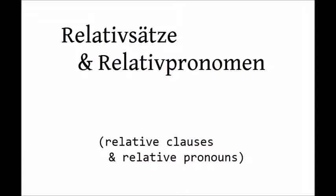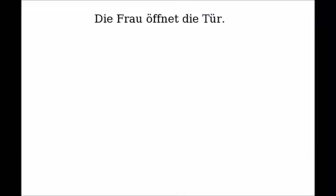Let's say you have a sentence like this: 'Die Frau öffnet die Tür' — 'The woman opens the door.' This sentence is very simple and it doesn't give you any information about which woman or which door you are talking about. To describe any of the nouns in more detail, you can add a subclause right after it. A subclause describing a noun is called a relative clause.